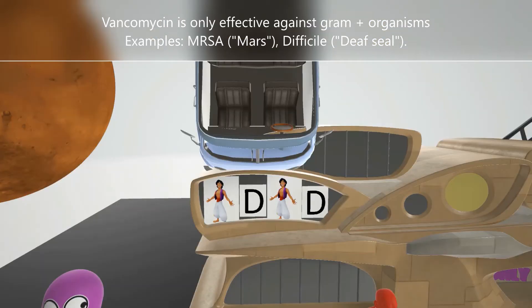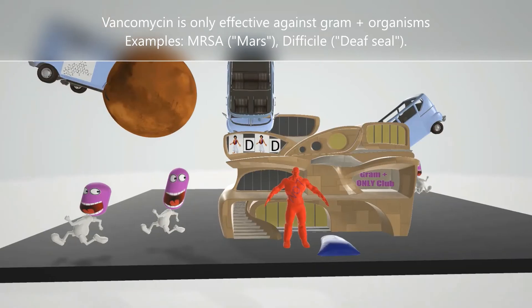It's important to remember that vancomycin is bactericidal against most bacteria. However, it is bacteriostatic against Clostridium difficile. There are a whole variety of gram-positive organisms vancomycin is effective against, but difficile and MRSA are two primary ones.